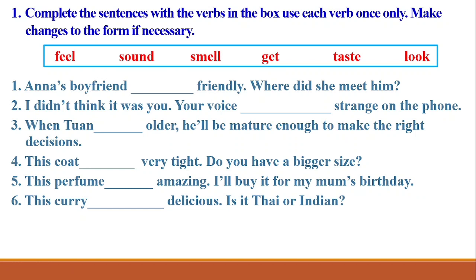Number two: 'your voice' — for a voice, which verb should we choose? Your voice sounds strange on the phone. Number three: Tuấn — older. Number four: coat, very tight. Number five: perfume, amazing. Number six: curry and delicious.